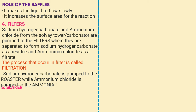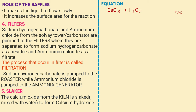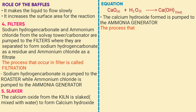The next part is the slaker. The calcium oxide from the kiln is slaked and mixed with water to form calcium hydroxide. The equation is: CaO (s) + H₂O (l) → Ca(OH)₂. The calcium hydroxide formed is pumped to the ammonia generator. The process that occurs in the slaker is called slaking.